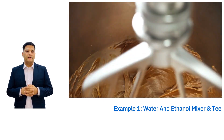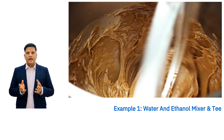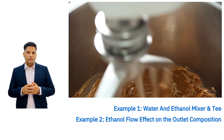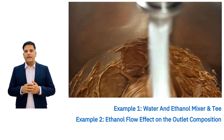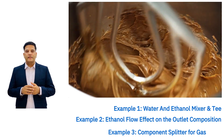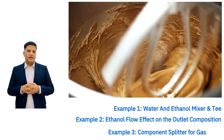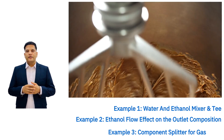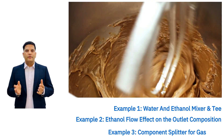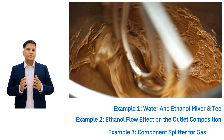In example one, we mixed water and ethanol using a mixer and split the outlet stream with a tee, calculating the outlet temperature and heat capacity. In example two, we again mixed water and ethanol and studied how varying the ethanol flow rate affected the outlet composition. In example three, we simulated a natural gas stream with methane, ethane, carbon dioxide, hydrogen sulfide, and nitrogen. Using a component splitter, we removed CO2 and H2S to obtain refined natural gas.